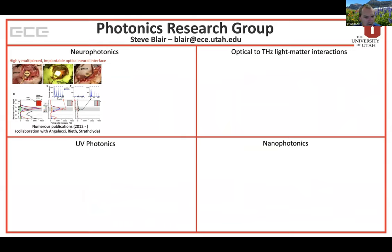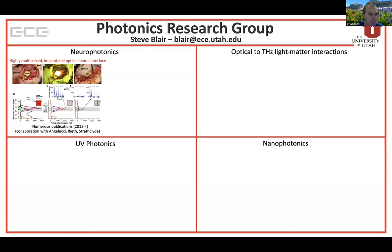In the area of neurophotonics, a lot of what we're doing is taking advantage of genetically engineered protein indicators to either control the activity of neural cells in the brain or to image the activity of neurons in the brain. We're developing highly multiplexed implantable optical neural interfaces to take advantage of optogenetics, which gives us the ability to selectively address neurons by subtype as well as through the wavelength of the light that we use for illumination.